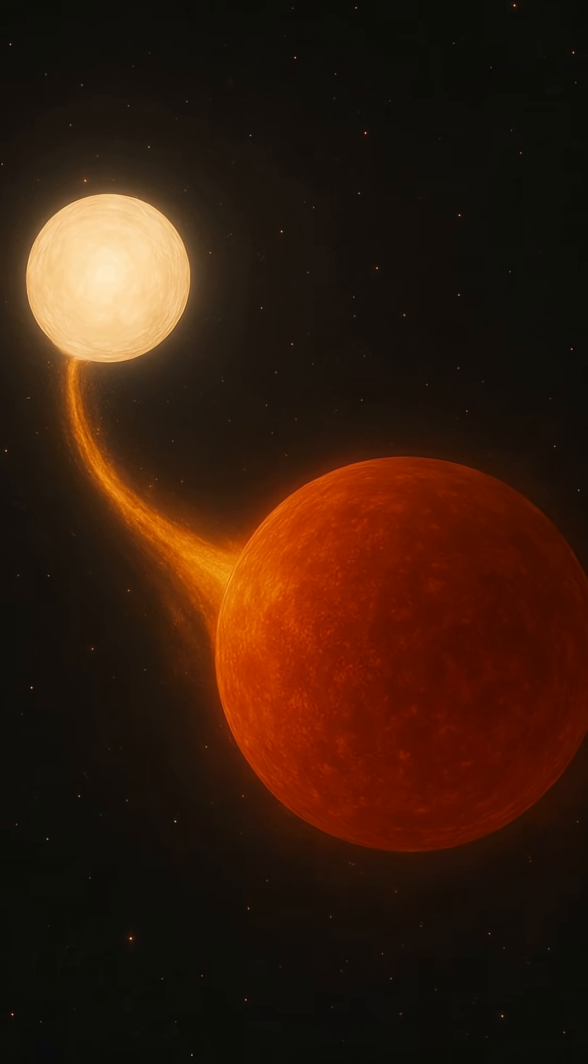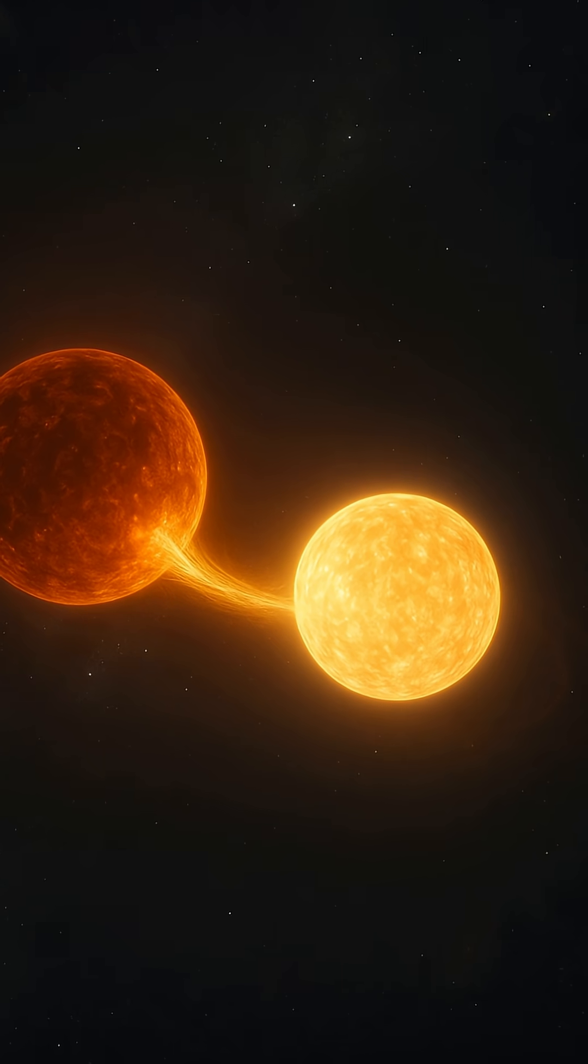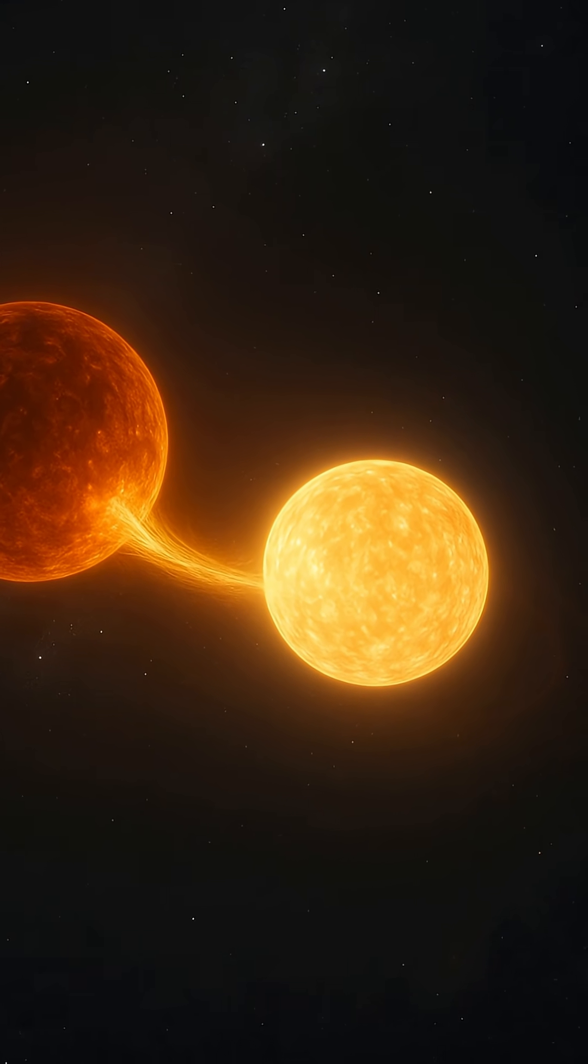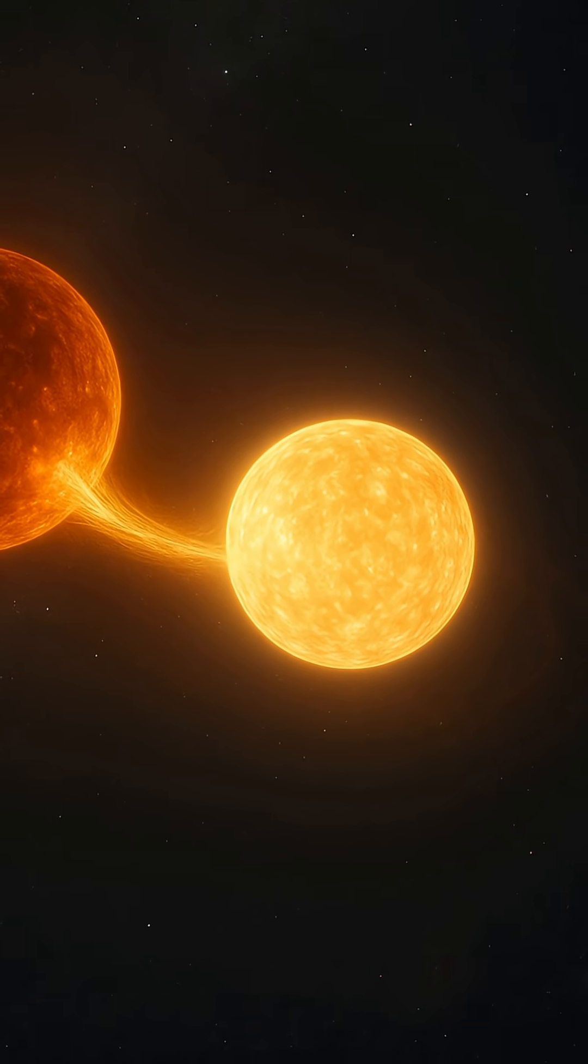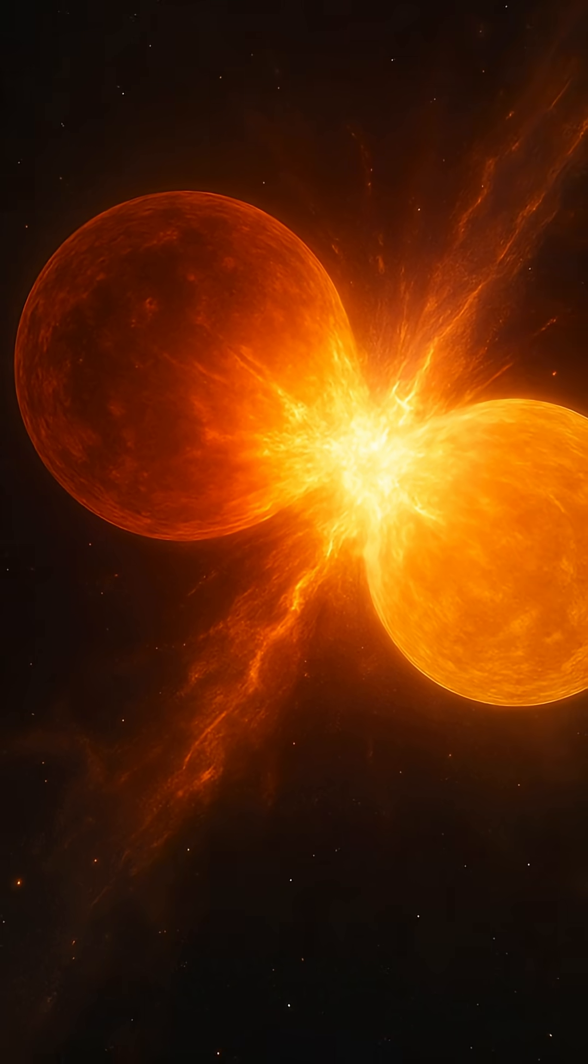These are binary stars, two suns locked in a gravitational dance, orbiting around a shared center of mass known as the Barycenter. This cosmic waltz can be subtle or violent, peaceful or cataclysmic, depending on the distance, mass, and nature of the stars involved.